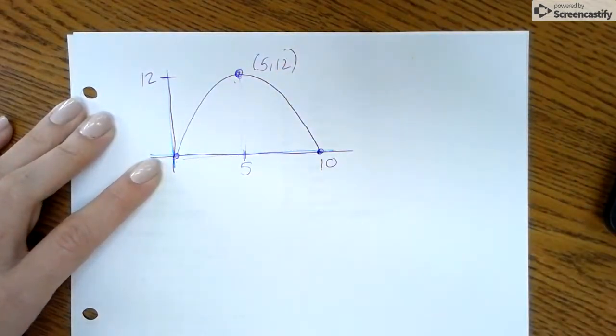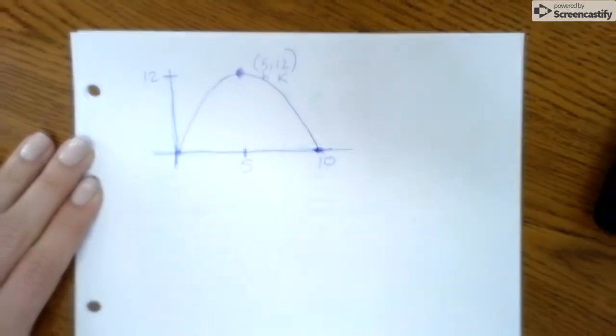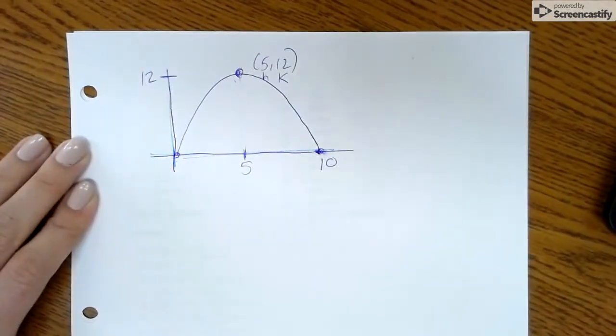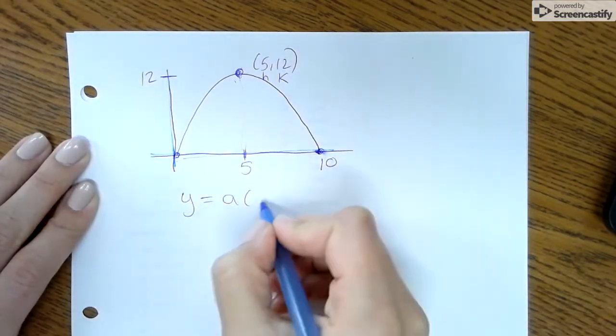Okay, now your vertex is also h,k in graphing form. So at this point, I'm going to say what I know right now is this.